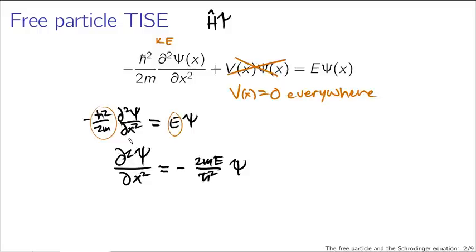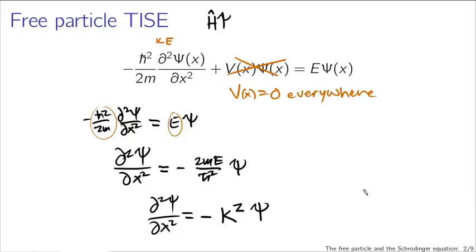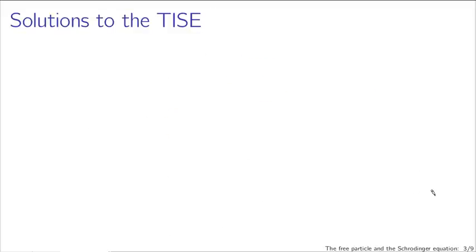Notice the second derivative of the wave function gives you the wave function back. The fact that we're taking a second derivative suggests that the constant here is perhaps squared. So I'll write this as the second derivative of psi with respect to x equals minus k squared times the wave function, where k is defined as the square root of 2mE over h-bar. This is the differential equation we need to solve.